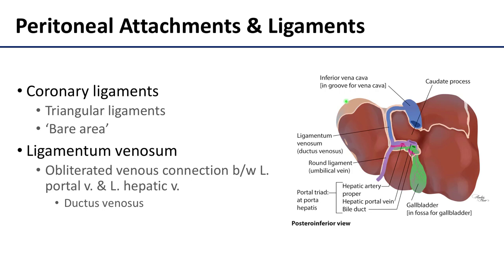The diaphragmatic surface of the liver is covered with visceral peritoneum, except posteriorly in what we refer to as the bare area of the liver. This is where the liver is attached to the diaphragm by areolar tissue, not by peritoneum. The visceral peritoneum that covers the majority of the rest of the liver are what we refer to as coronary ligaments and triangular ligaments.